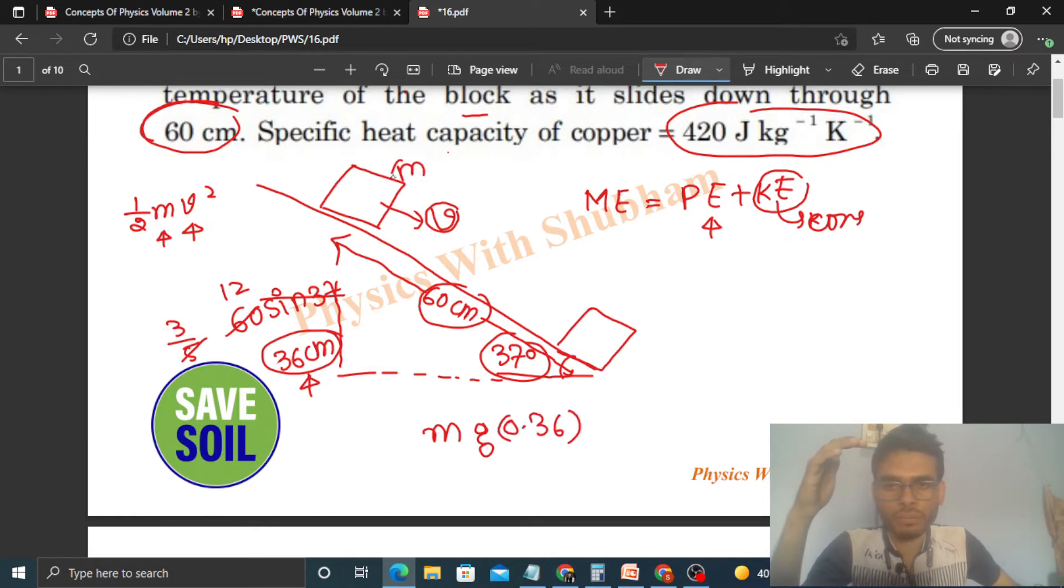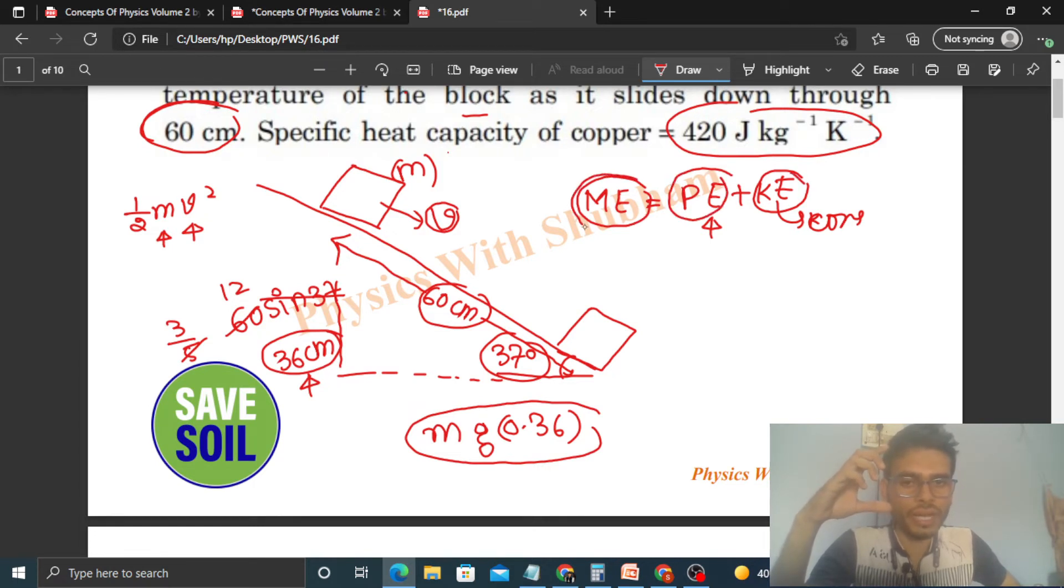Mass of this copper block... So this much potential energy decrease, or you can say this much mechanical energy decrease, because kinetic energy is constant. So this decrease in potential energy is the decrease in mechanical energy.